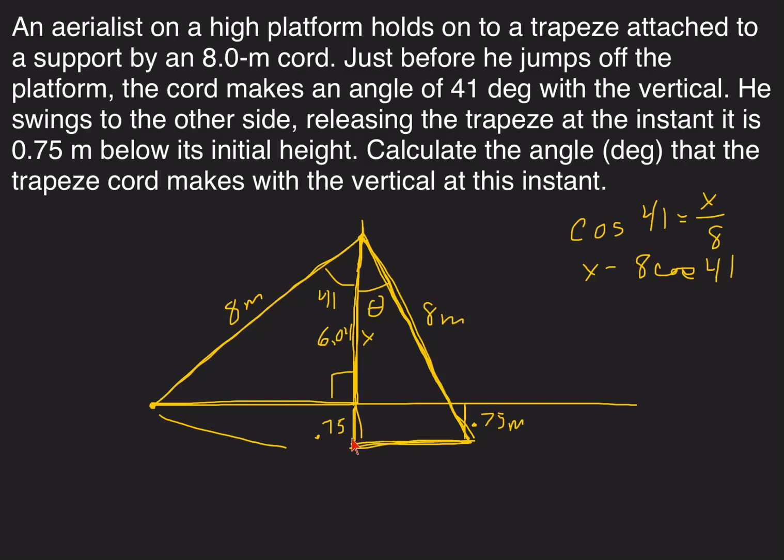I have a triangle here where I know the hypotenuse is eight and this adjacent side is 6.79. So I can do another cosine problem to figure out this angle. Cosine of the angle equals the adjacent side, 6.79, over 8. I take 6.79 divided by 8 and take the inverse cosine.